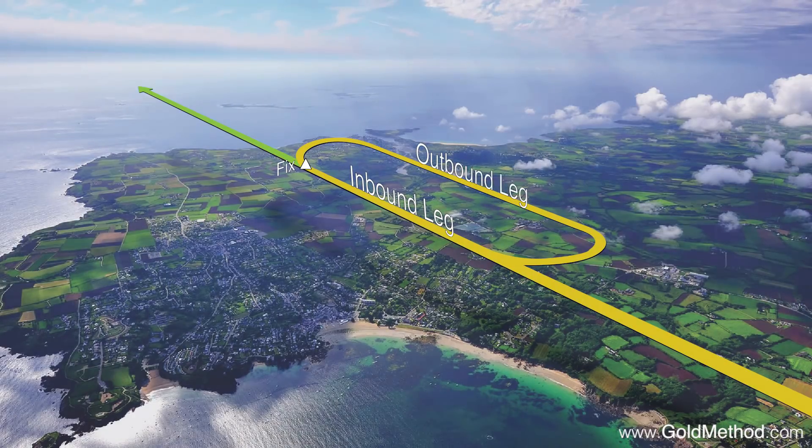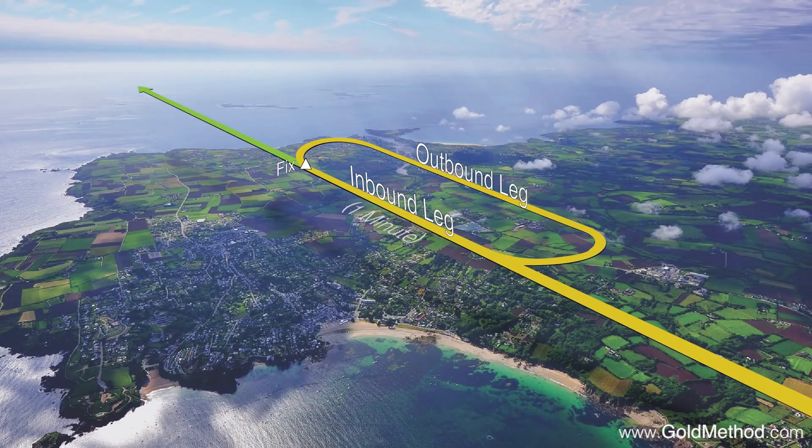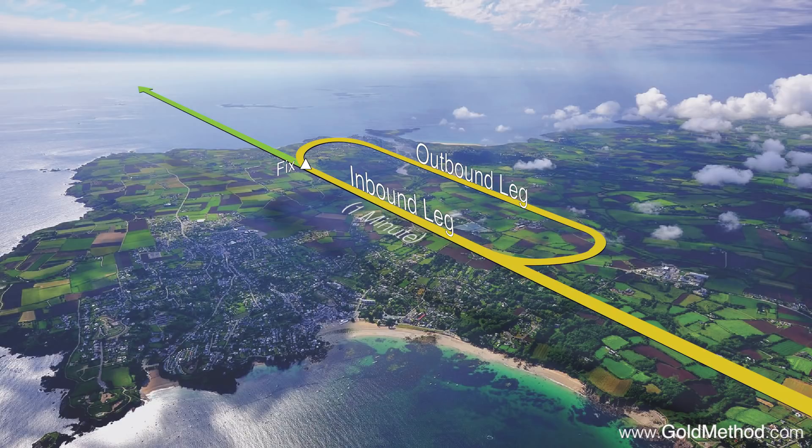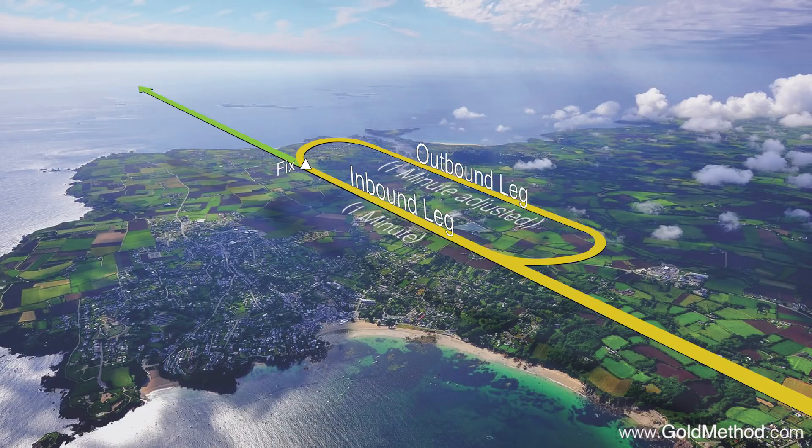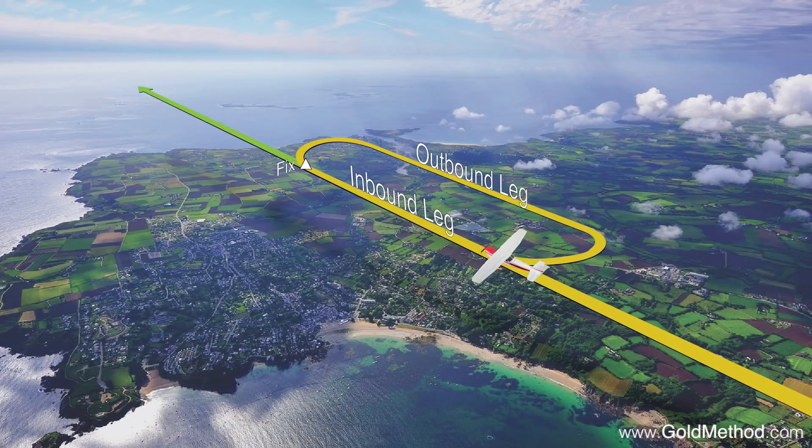If there is no published or given distance for each leg of the hold, then you should fly one minute legs. This one minute leg is referring to the inbound leg. So if you're dealing with wind, you may have to adjust your outbound leg time to allow the inbound leg to equal one minute. You will start your timer when you have crossed the fix, or you beam the fix, whichever occurs later.